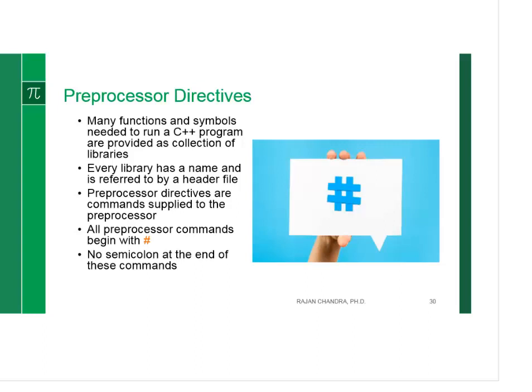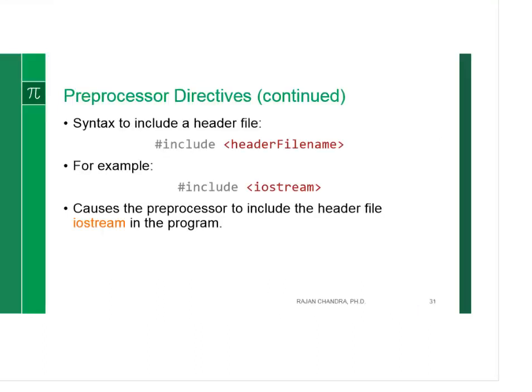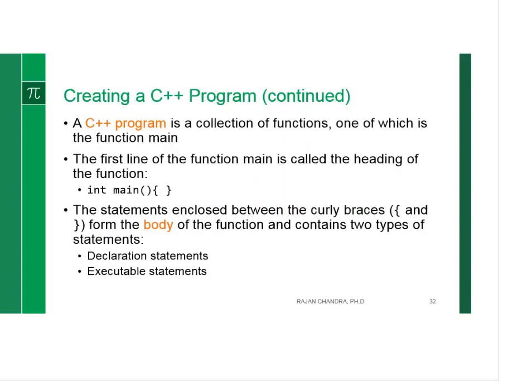In any program, we normally use the preprocessor directive. That means we include the library that has been developed already. For instance, here I say include iostream. That's very important, where the library contains all functions that we do in order to perform the input-output operation. If you want to create a C++ program, it's a collection of functions. The main function must be there all the time, and it is the way it is written.